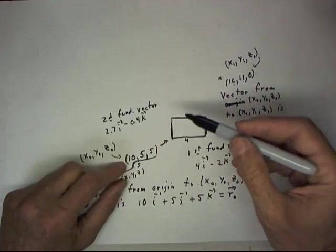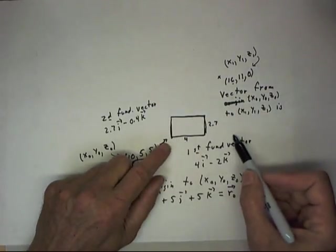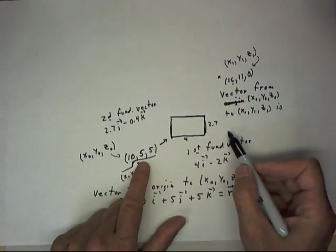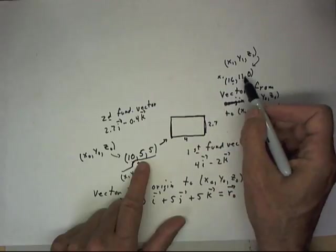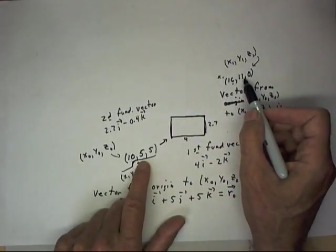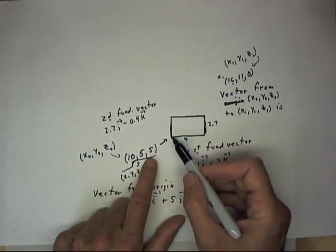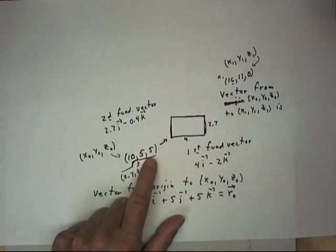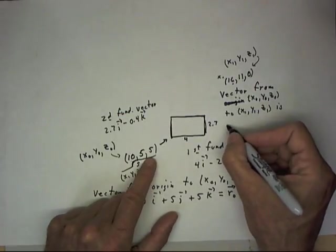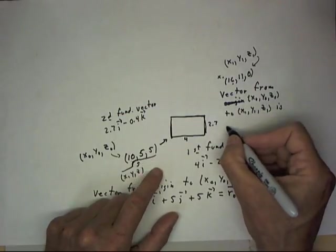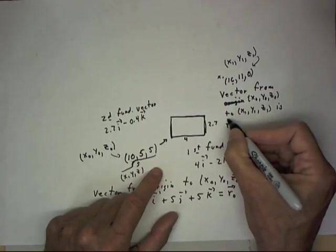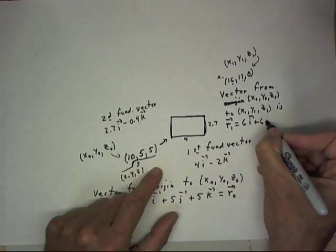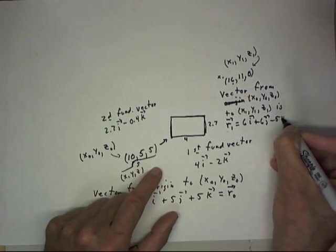Well, if we start at ten and run in the x direction to sixteen, we've moved six units. If we started at y coordinate five and run up to y coordinate eleven, that's going to be six units in the y direction. And if we start at z coordinate five and go down to z equals zero, that's going to be a change of negative five. We're going to call this vector r1 equals six i plus six j minus five k.